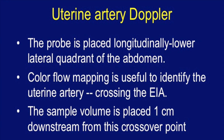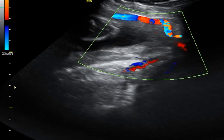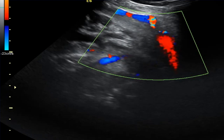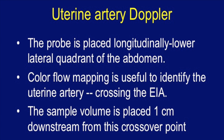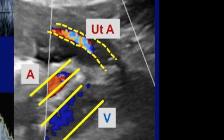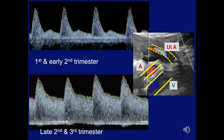For uterine artery Doppler, place the probe longitudinally in the lower lateral quadrant. Color flow mapping identifies the uterine artery as it crosses over the iliac artery, and the sample volume is placed one centimeter downstream from this crossover point. There is a very high forward diastolic flow in the third trimester, and PI greater than the 95th percentile is abnormal.